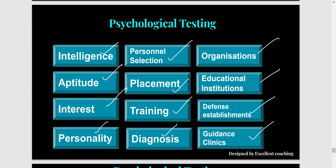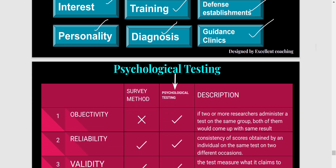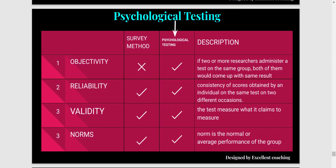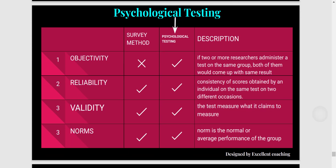A psychological test needs to be a very objective and standardized measure to assess people. There are three to four things that need to be established: first, whether the test is objective; second, whether it is reliable; third, the validity of the test; and fourth, the norms that are followed during administration.